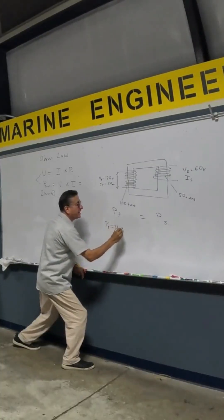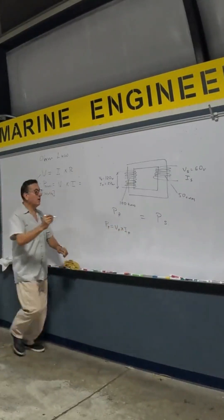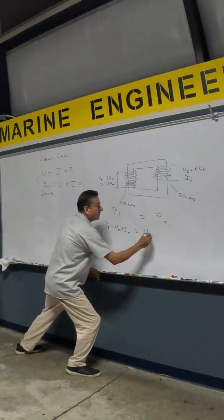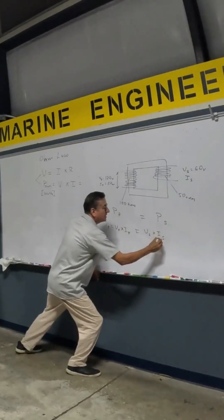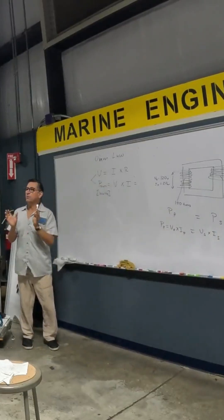Power in the primary should be voltage in the primary times intensity in the primary. Everybody follow me? That should be equal to the voltage in the secondary times intensity in the secondary, because the power is identical.